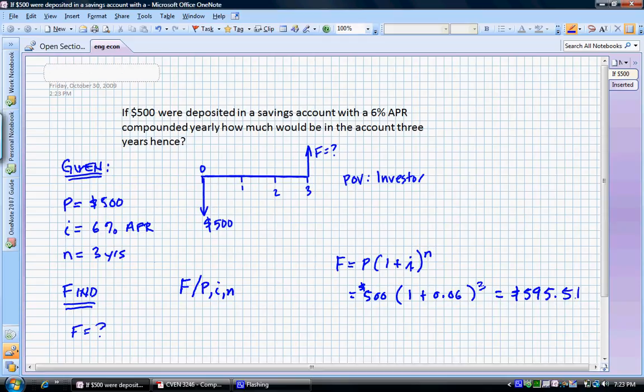An alternate way to do the problem, and a way to check to see if we got the right answer, is to use the factor. And remember, to use the factor, we need to use the appropriate notation. And that is, F is equal to P times the factor F slash P, 6% to the three, which is the number of interest periods. And that, in this problem, is 500 times, now we need to look up the factor.